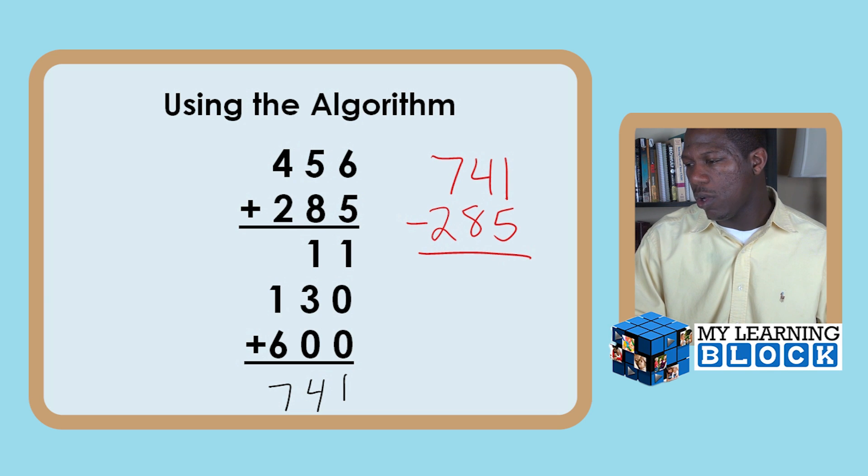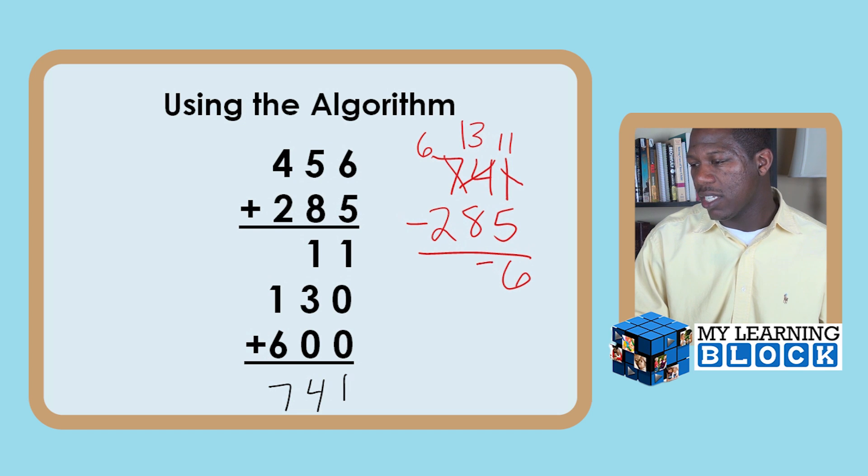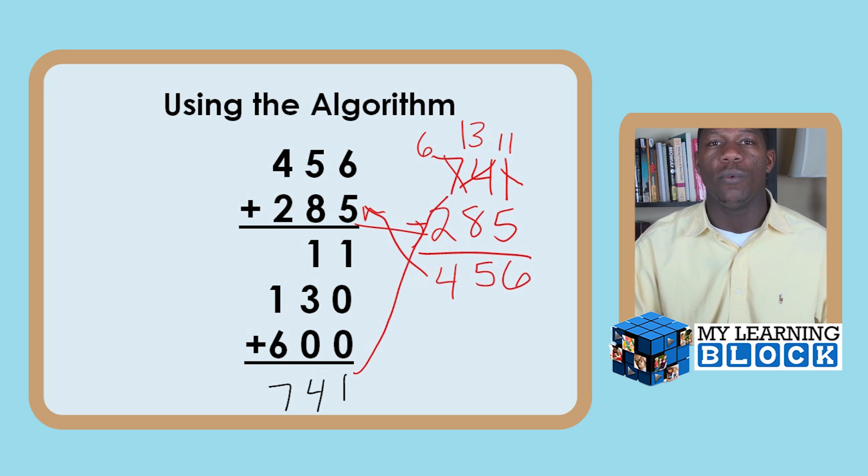All right. So I'm going to go 1 minus 5. Don't want negative numbers. So I'll borrow from you, become a 3. Then I'll add my 11. 11 minus 5 equals 6. Oh, no, he needs to borrow. He becomes a 6. 13 minus 8 equals 5. And 6 minus 2 equals 4. 456. Yay! 285. Yay! And 741. So after it's checked, it works perfectly.